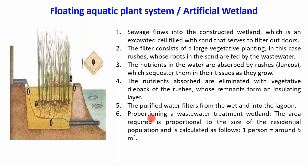This system is called artificial wetland. The approximate area requirement for this wetland is around five square meters per person. Depending on the population in that region, we have to calculate the total area requirement for this artificial wetland to achieve good efficiency of this filtration technique.